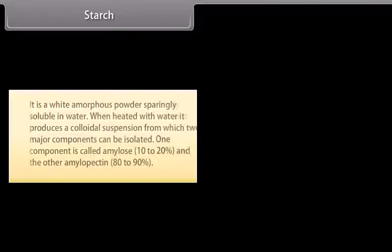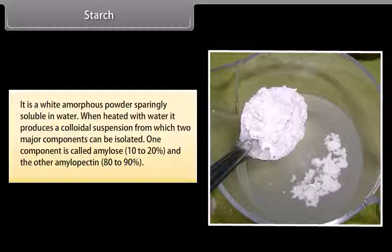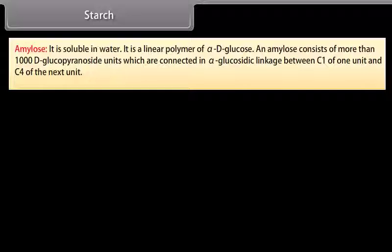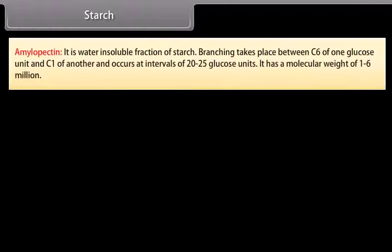Starch is a white amorphous powder, sparingly soluble in water. When heated with water, it produces a colloidal suspension from which two major components can be isolated: amylose and amylopectin. Amylose is soluble in water and is a linear polymer of alpha-D-glucose; it consists of more than 1,000 D-glucopyranose units connected by alpha-glucosidic linkage between C1 of one unit and C4 of the next unit. Amylopectin is the water-soluble fraction of starch; branching takes place between C6 of one glucose unit and C1 of another, occurring at intervals of 20 to 25 glucose units. It has a molecular weight of 1 to 6 million.